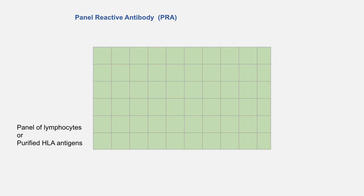Now we will discuss identification of HLA antibodies. One aspect is called panel reactive antibody, or PRA. With this test, we identify what percentage of the population a person has antibodies against. We perform this test based on the CDC technique. We have a tray with 30 to 60 chambers, and each chamber has lymphocytes derived from one person, or purified HLA antigens derived from one person.